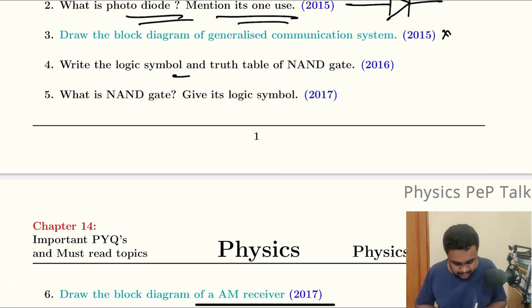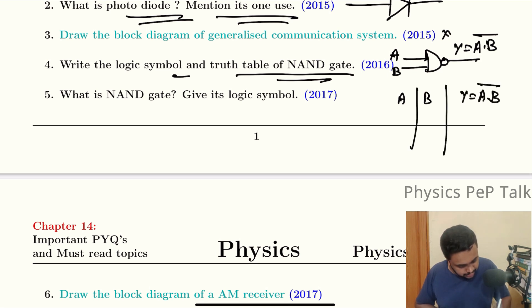Write the logic symbol and truth table of NAND gate. NAND gate logic symbol is this. Y equals A dot B whole bar. A and B are the inputs, and Y equals A dot B whole bar is the output. Truth table: 0, 0; 0, 1; 1, 0; 1, 1 are the inputs. This is 1, 1, 1, 0.